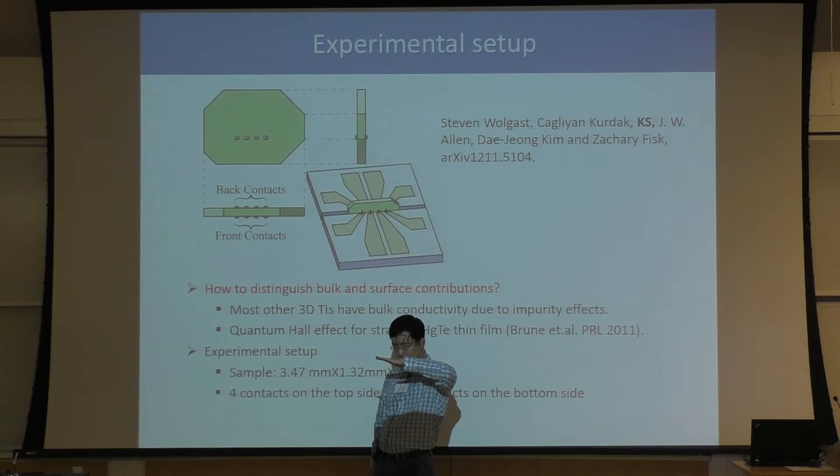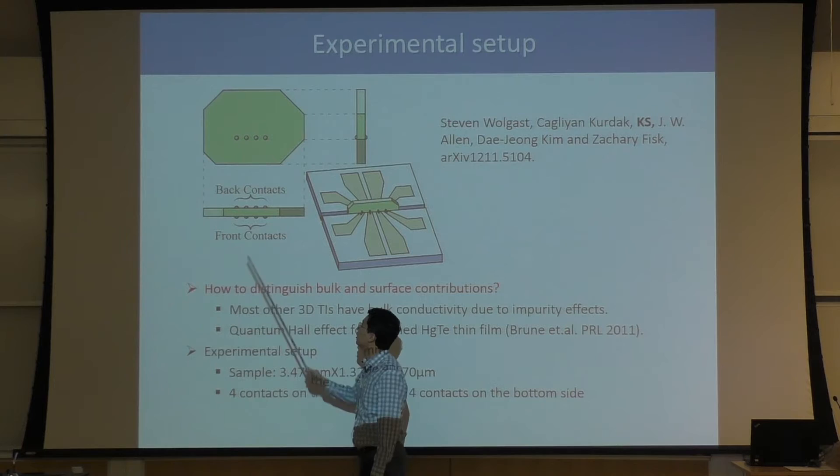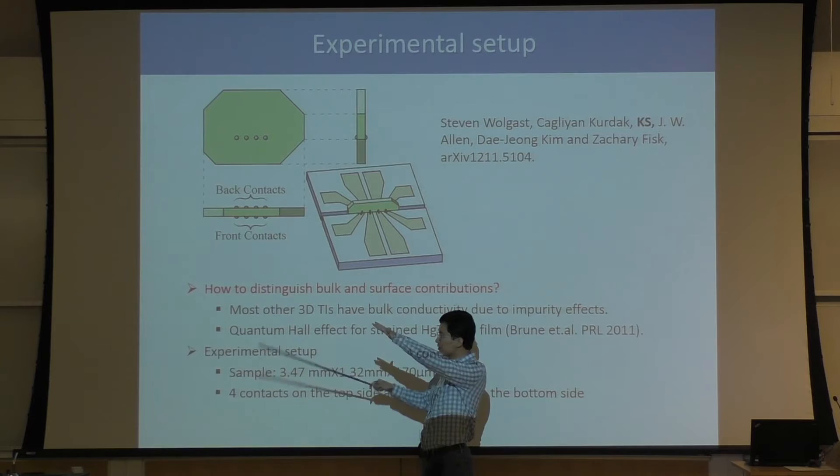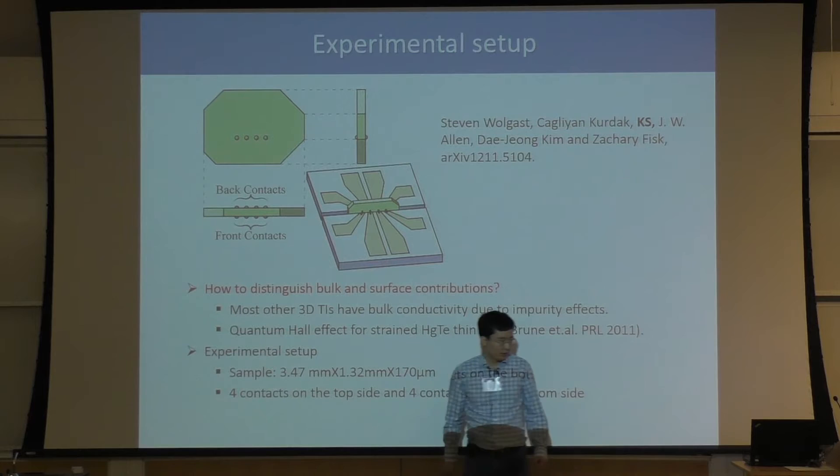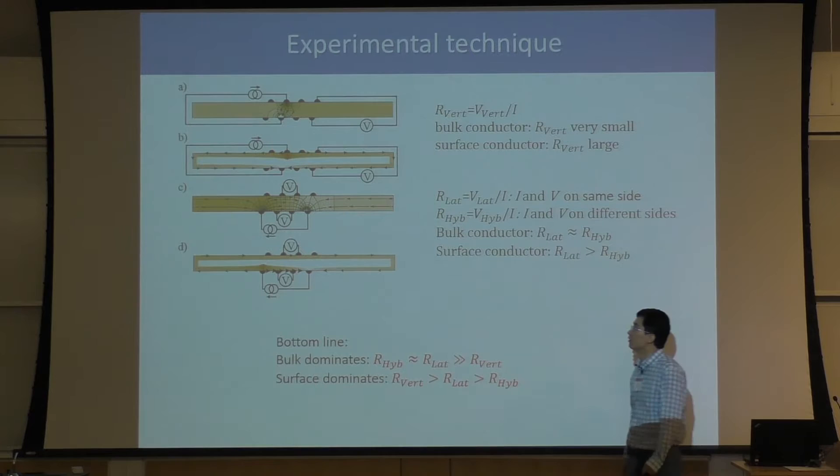He got a relatively thin sample. The x and y directions are pretty large, but it's thin from the side view. On this thin piece of SMB6, he puts four leads on the top and four leads on the bottom side. With these leads connected to wires, he can do some very fancy transport measurements.